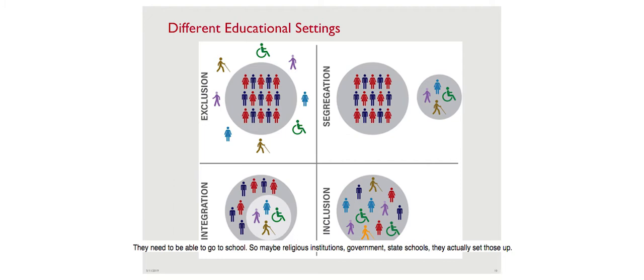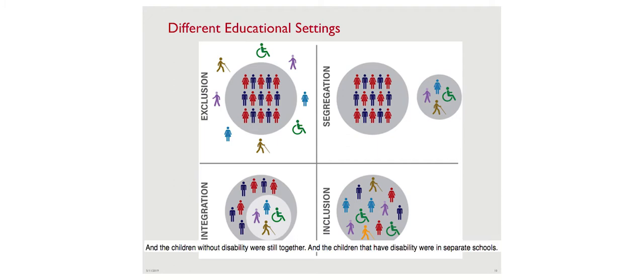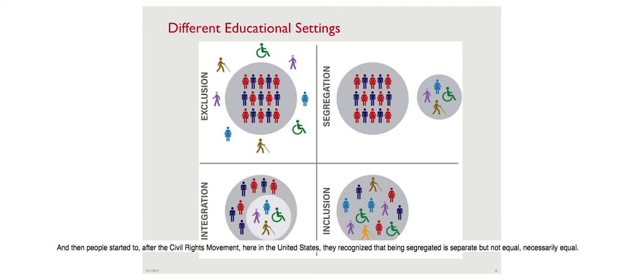People started to recognize that children with disabilities have equal rights to education. So religious institutions, governments, and state schools set up schools - but they were segregated. That's the second picture: children without disabilities were together, while children with disabilities were in separate schools - schools for intellectual disabilities, for blind, deaf, and so on.